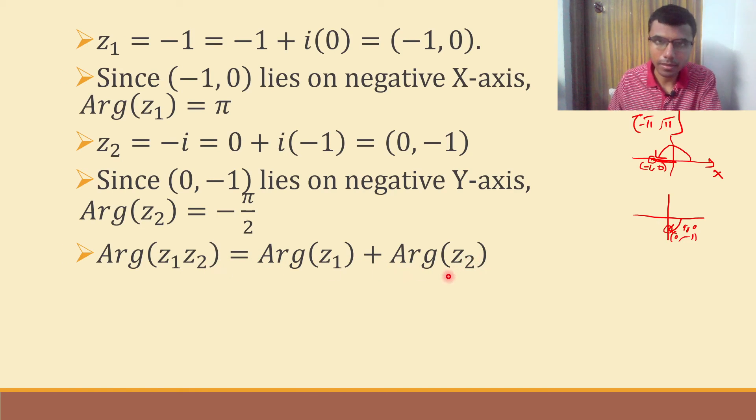Here in this case this applies. Now argument of z1 is pi and argument of z2 is minus pi over 2. That's what I wrote, pi minus pi over 2. Pi minus pi by 2 is nothing but pi by 2. That's it, this is my required answer.